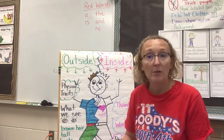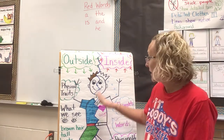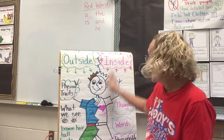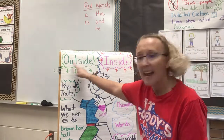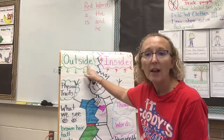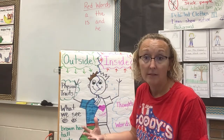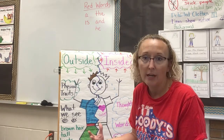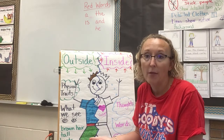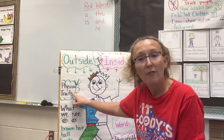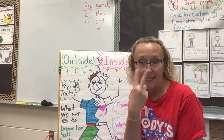I made this little poster to help us. On this side I'm talking about what a character is like on the outside — what he looks like when we look at him. We can describe somebody by how they look. Those are the physical traits, what we see.